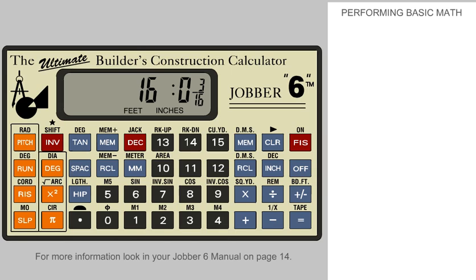Now we need to see if there is a leftover remainder. To do this, first press the invert key. This puts the calculator in the secondary key mode. Notice the secondary lettering above the divide key is RIM, which stands for remainder. So we see there is a 3 sixteenths remainder left over to be made up if needed.